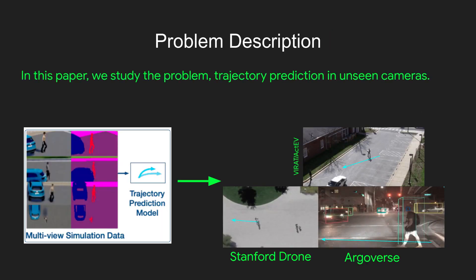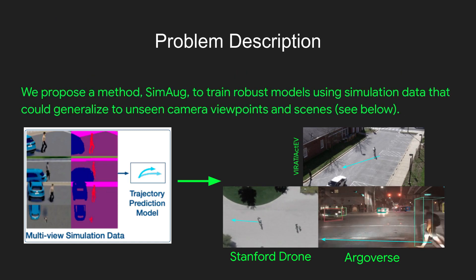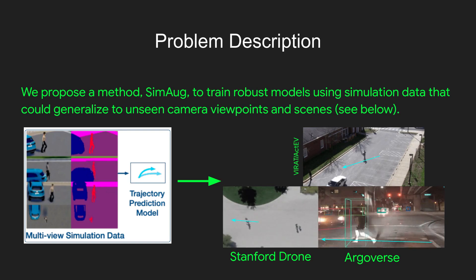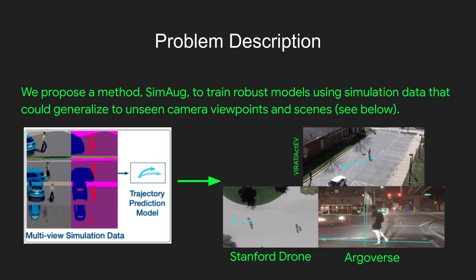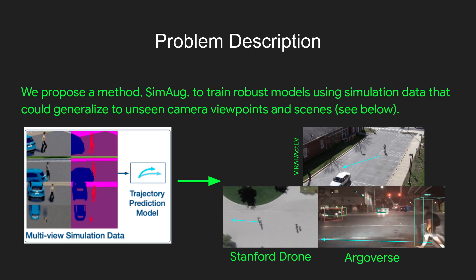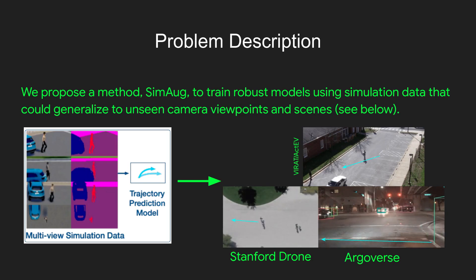In this paper, we study the problem of trajectory prediction in unseen cameras. We propose a method called SimArc to train robust models using simulation data, as you can see on the left here, that could generalize to unseen camera viewpoints and scenes. As an example, our testing data includes 45-degree view surveillance video, drone videos, as well as dashboard cameras.